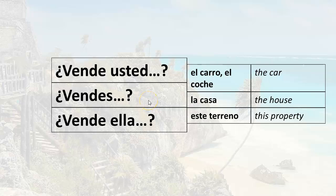With the informal tú, you can simply say vendes — the tú is not necessary, because by the ending of the verb we know the subject is tú, and the -es ending only goes with tú. So you can simply ask vendes el carro or vendes el coche — do you sell the car? Vendes la casa — do you sell the house? Vendes este terreno — do you sell this property?